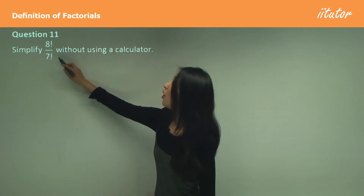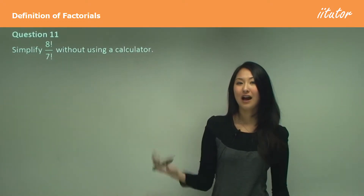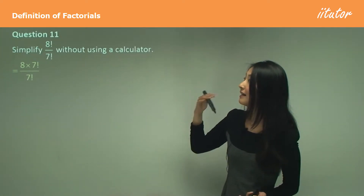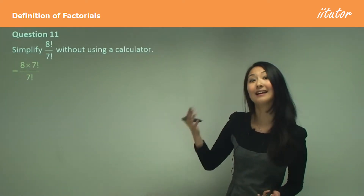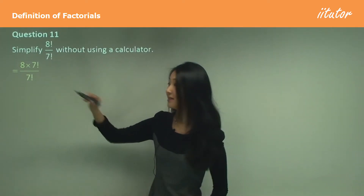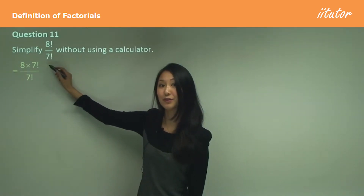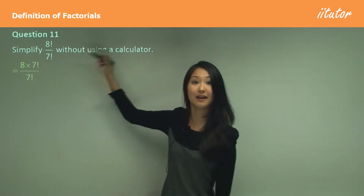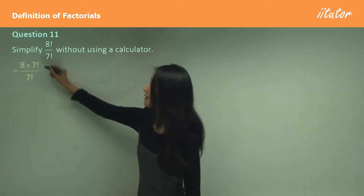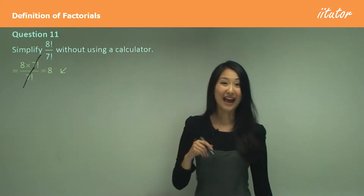Now simplify 8 factorial over 7 factorial without a calculator. An easier approach is to rewrite 8 factorial as 8 times 7 factorial, because 7 factorial represents 7 × 6 × 5 and so on. Written this way, the two 7 factorials cancel, leaving just 8.